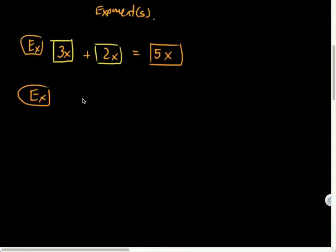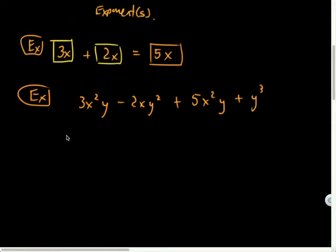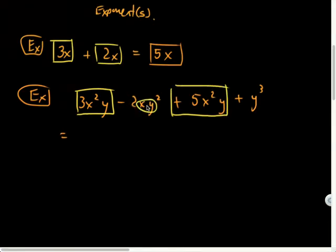And because they are like terms, I can add them up. So 3x plus 2x, all I'm going to do is add the coefficients. So 3 plus 2 is 5x. So let's do one more tricky one. Let's say I have 3x²y - 2xy² + 5x²y + y³.